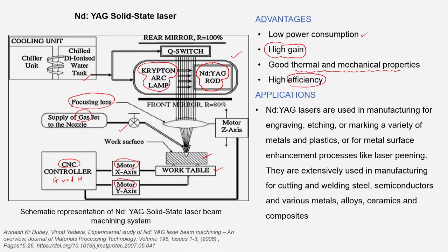Nd:YAG lasers are widely used for engraving, etching, and marking of a variety of metals and plastics. They are also used for enhancement processes such as laser peening — a surface modification technique that modifies surface texture using plasma waves. Additionally, Nd:YAG is used in welding of steels and processing semiconductors, alloys, ceramics, and composites.